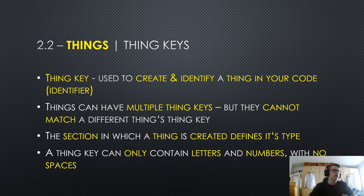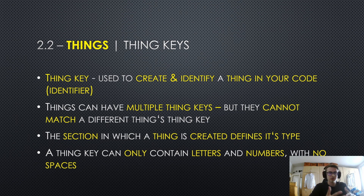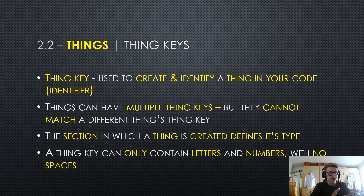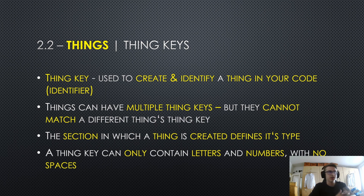Now that we have overviewed what things are, let's move on to thing keys — and this is extremely important so pay attention. Thing keys are used to create and identify a thing in your code. This is also known as an identifier. Things can have multiple thing keys but they cannot match a different thing's thing key.